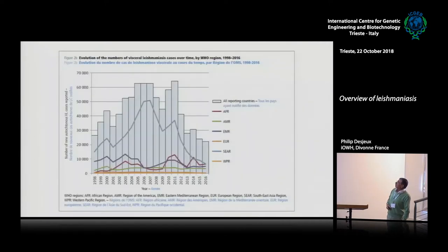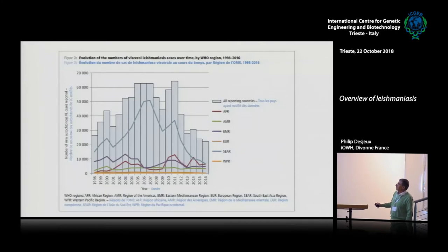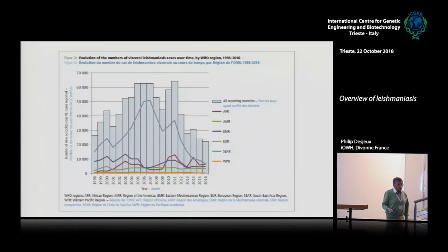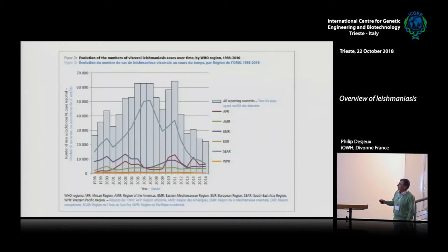This data is from October 2008, and it's very interesting to illustrate what I just said. The blue line is the Indian subcontinent. You see that in 2006 we were above 60,000 — even before that, 70,000 cases per year. And now we are at less than 10,000. It's a fantastic, drastic reduction. It's the unique place where we have seen this, because of the Kala-azar Elimination Programme. In other areas, you see different colours — it fluctuates — but there is no sharp reduction as in Asia.